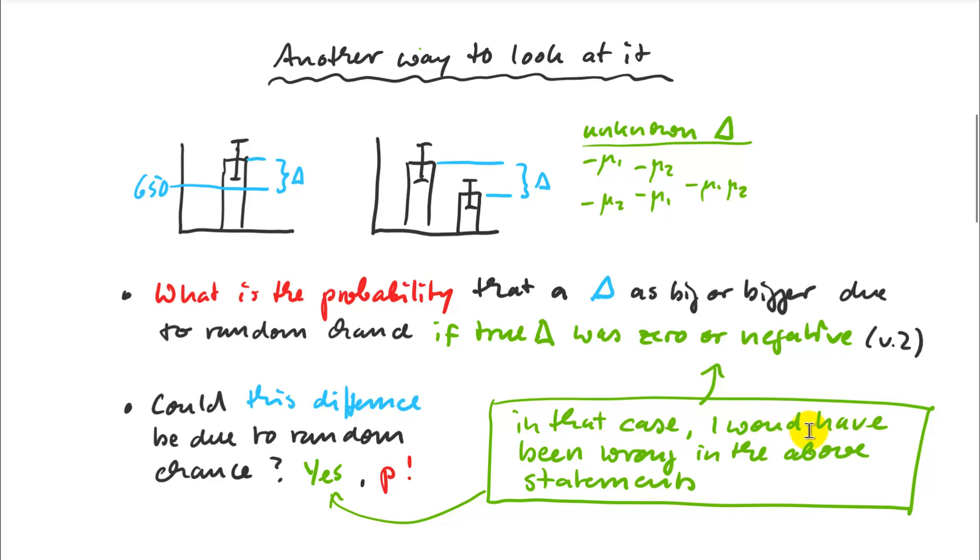That is the probability that I would have been wrong in my previous statistical statements. So if I claim variety A is bigger than 650 with a 99.3% chance, I could have been wrong. There is a small chance, 0.007, that I would have been wrong, that it's actually not, that it's equal or even less. So that is my p-value, that the difference that I observe is just a random sample artifact. That's what the p-value really means.